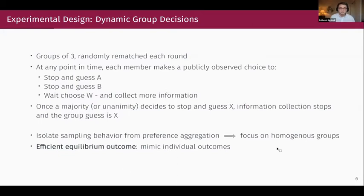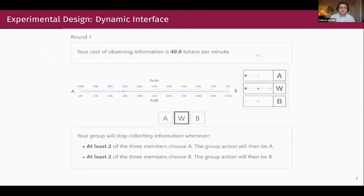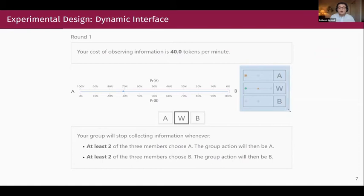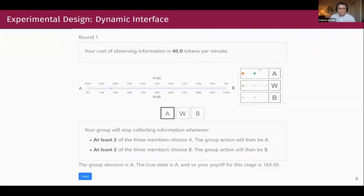This is the interface participants saw. At the top, we remind participants of the cost of collecting information; at the bottom, the voting rule. The information delivery mechanism is familiar. Participants have three buttons: W for wait at the beginning of the game, A to vote for A, and B to vote for B. Participants can see how their group mates have voted — you are always the green circle, group mates are the orange square or triangle. If one person has already voted for A and the participant also votes A, with majority rule, two out of three votes for A means A is implemented as the group guess. Instant feedback is given at the bottom regarding whether the state was correct and the payoff.